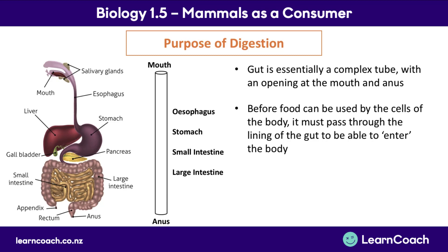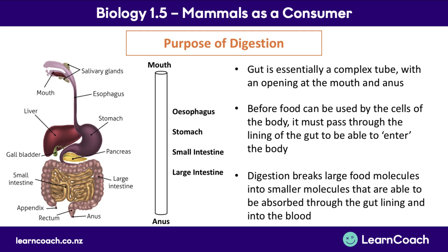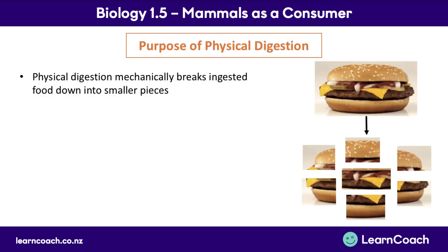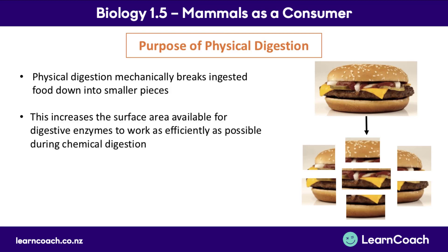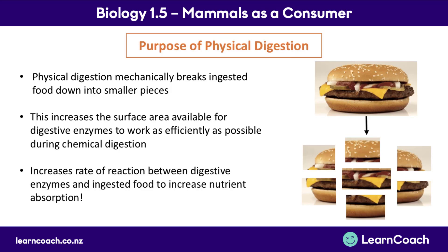Before food can be used by the cells of the body, it's got to pass through the lining of the gut — we have to absorb it. The whole purpose of digestion is to break down large food molecules into smaller ones so we can absorb them through the gut lining into our blood. Physical digestion mechanically breaks food into smaller pieces, increasing the surface area available for digestive enzymes to work efficiently during chemical digestion, which increases the rate of reaction and nutrient absorption.